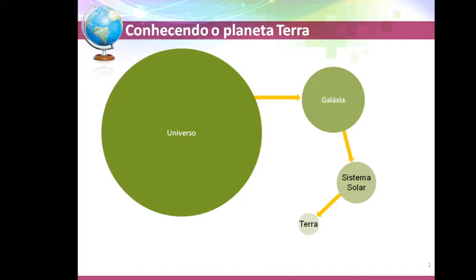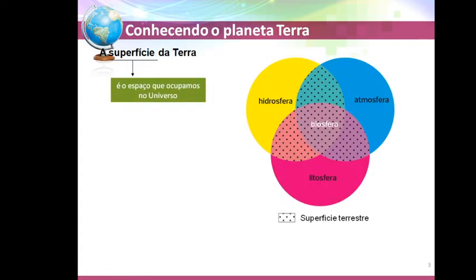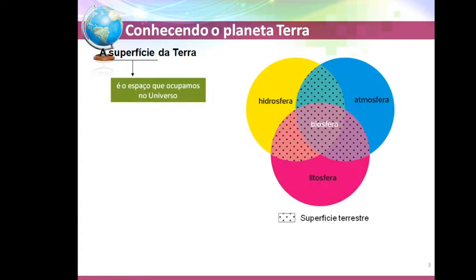O planeta Terra é o planeta em que nós habitamos. Ele é constituído basicamente por quatro principais elementos: a litosfera, a hidrosfera e a atmosfera. Esses três elementos em conjunto acabam dando condições adequadas para que se possa ter vida no planeta Terra — ou seja, vão formar a biosfera.